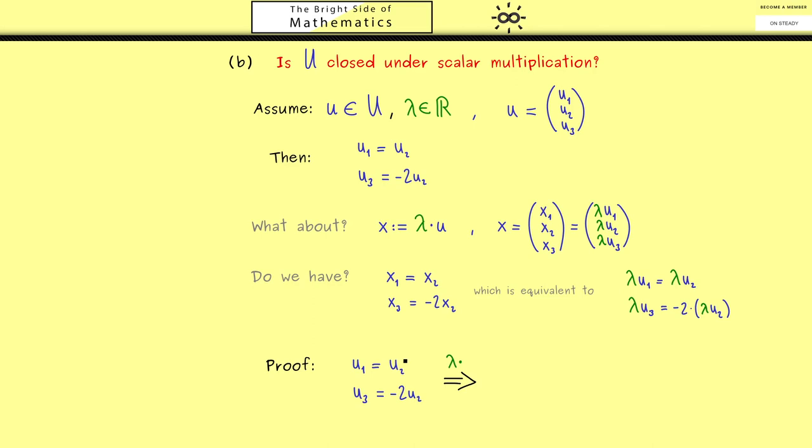More precisely, we have this as our assumption, which means these two equations are our starting point. To get here, we need a λ. Therefore, let's multiply both equations on both sides with λ. This is not a complicated move. Then we only need one exchange of two numbers to get what we want. Hence, the conclusion is the vector x—that is λ times u—is an element of the set U as well. In summary, we can also check the second part here.